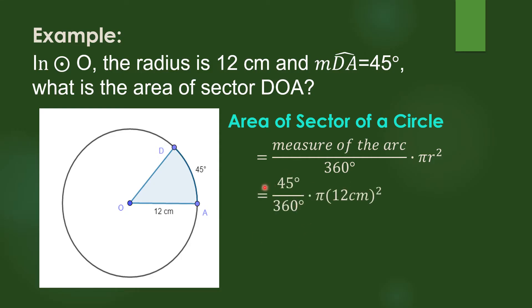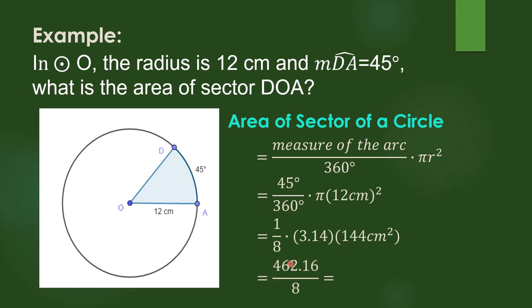We substitute the measure of the arc, which is 45, and the radius is 12 centimeters. So 45 over 360 in lowest term is 1 over 8. Pi here has the value of approximately 3.14, and 12 squared is 144. We multiply 1 times 3.14 times 144, which is 462.16, divided by 8, giving us 56.52 square centimeters. So the area of sector DOA is 56.52 square centimeters.